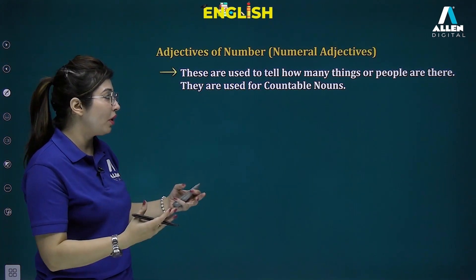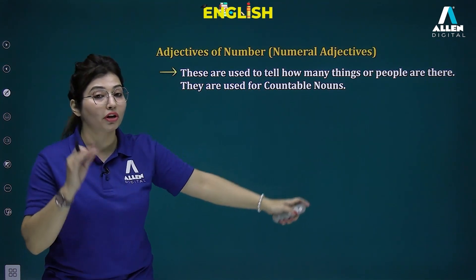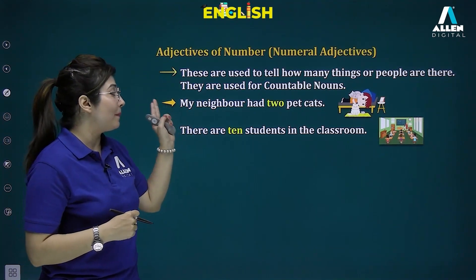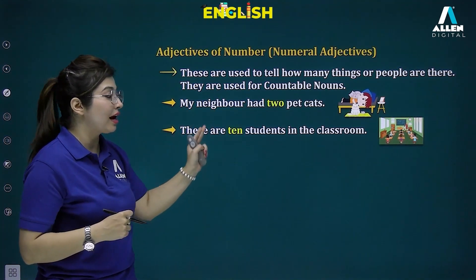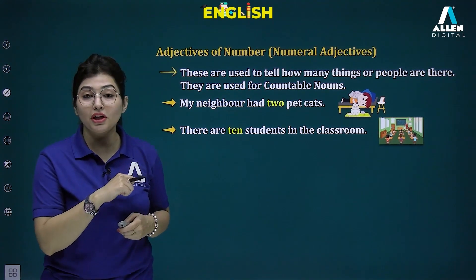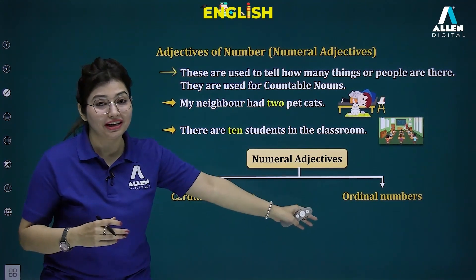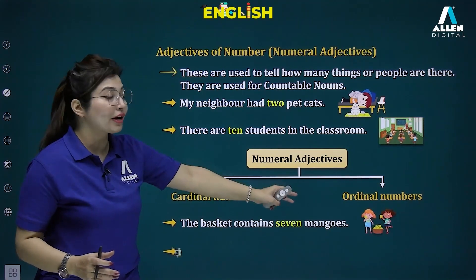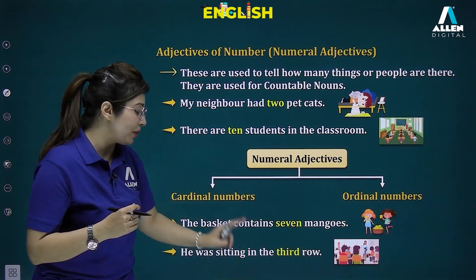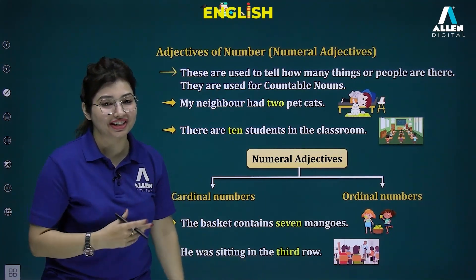Adjectives of number — numeral adjectives — are used when we know the exact number, and they apply to countable nouns. Numbers can be cardinal (one, two, three, four) or ordinal (first, second, third, last). Examples: 'my neighbor had two pets', 'there are ten students', 'the basket contains seven mangoes', 'he was sitting in the third row.'